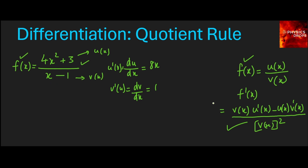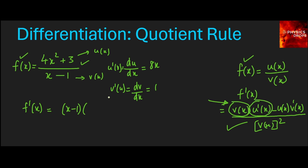Now let's substitute into the formula. The differentiation of f(x) becomes: v(x) — which is whatever is in the denominator — written as it is, multiplied by the differentiation of u(x), which is 8x.